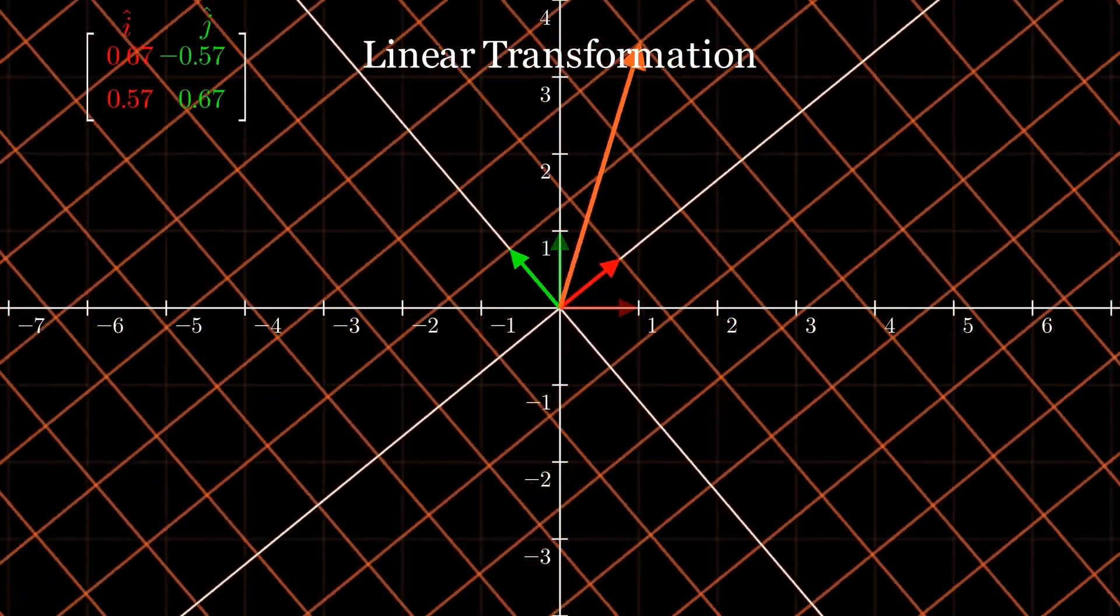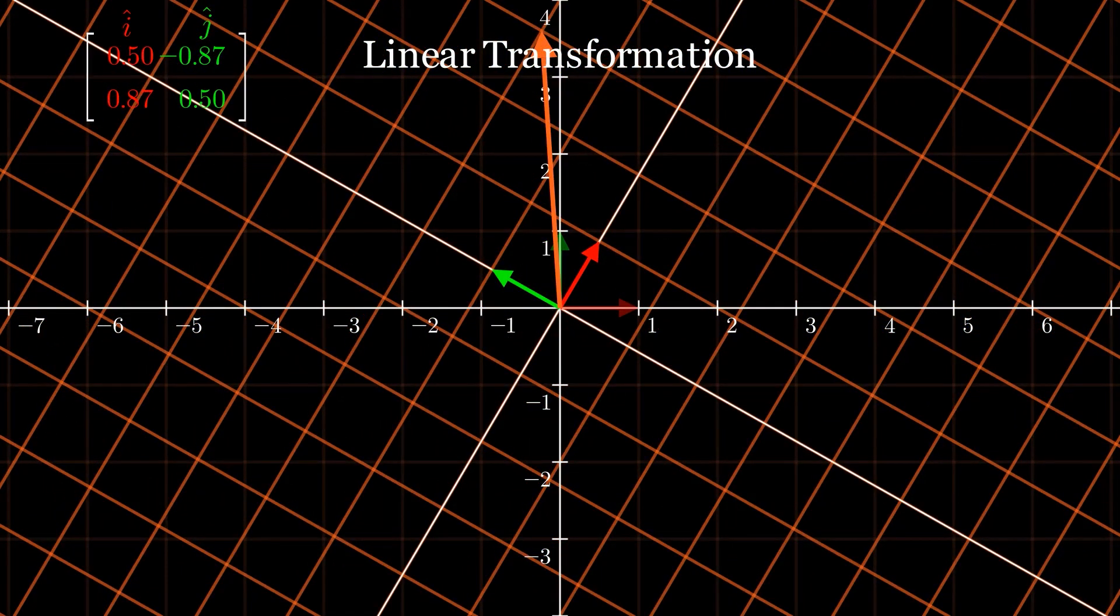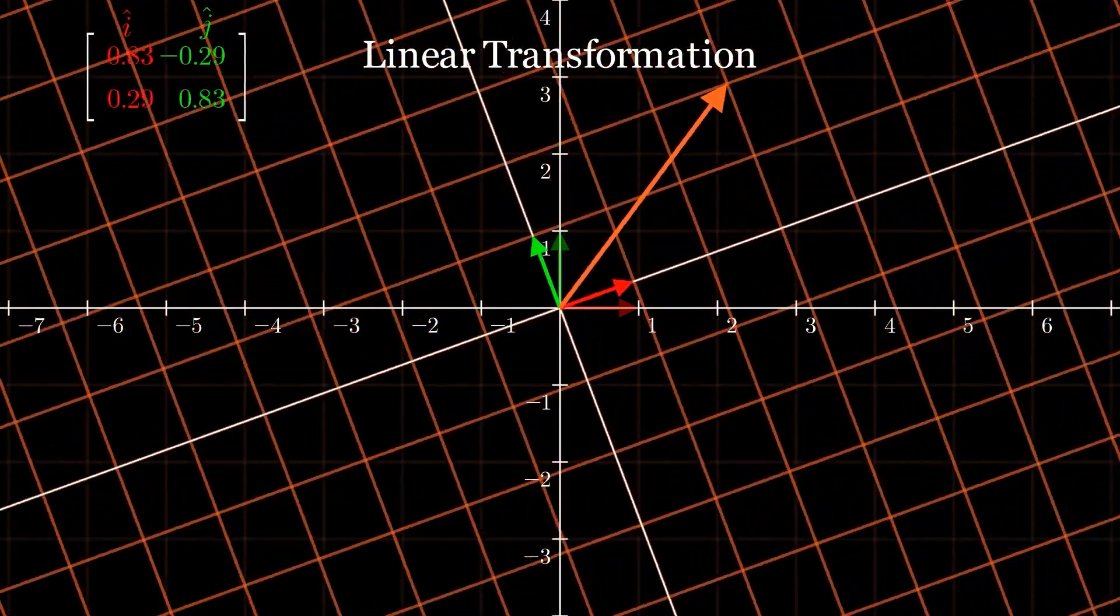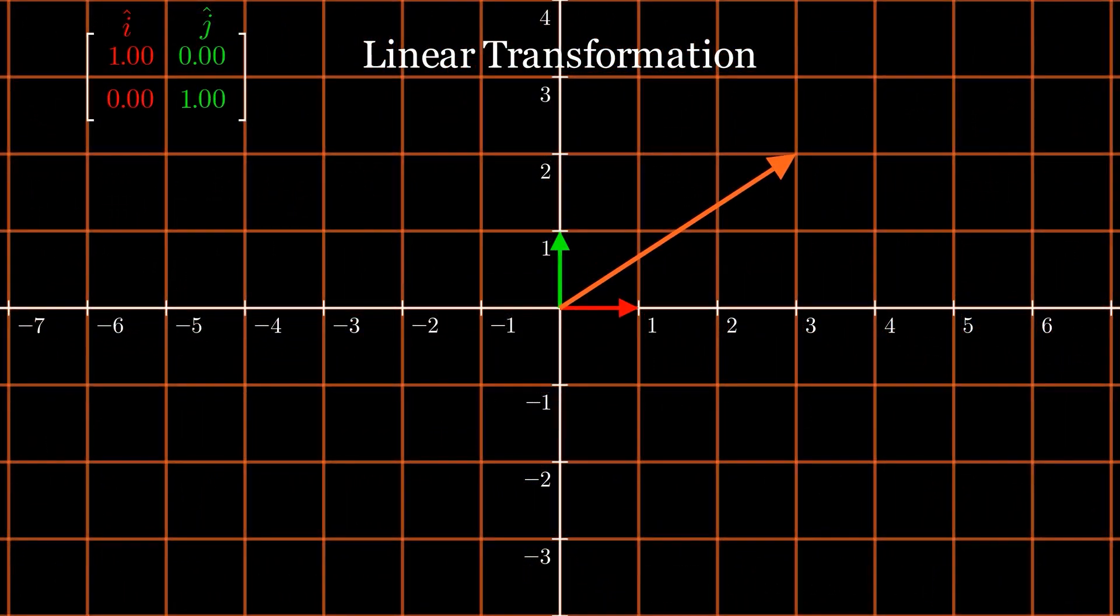A rotation is a combination of shear and scale and all four elements of the matrix are involved. What if we want to rotate by a specific angle? For that, we need a special matrix called the rotation matrix.